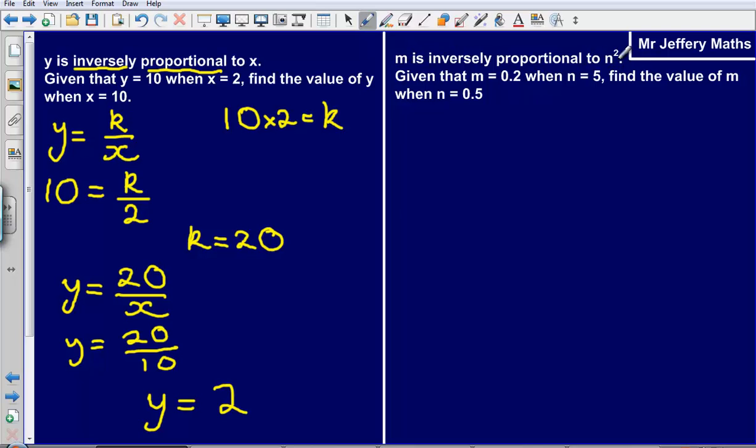M is inversely proportional to n squared. Given that m is equal to 0.2 when n equals 5, find the value of m when n is equal to 0.5.